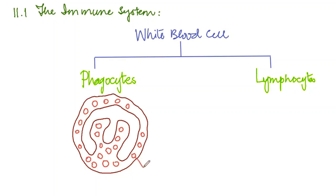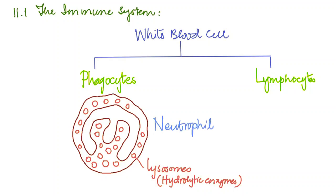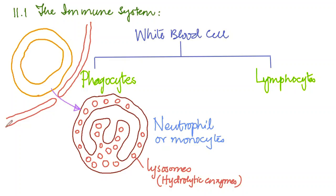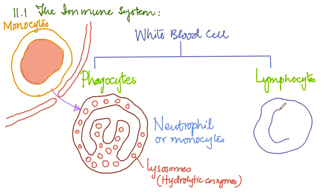These granules are basically lysosomes, and these lysosomes contain hydrolytic enzymes which play a very important role in killing pathogens. This specific phagocyte is called a neutrophil. The monocytes are transformed into neutrophils once they cross the walls of the capillaries through gaps present in the capillary walls. On the other hand, lymphocytes play their own role — they produce antibodies. Lymphocytes are stored in the lymph nodes, which is why they are called lymphocytes.